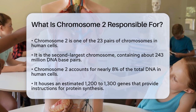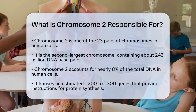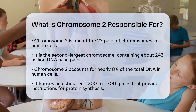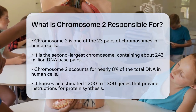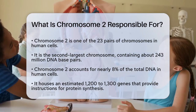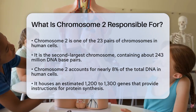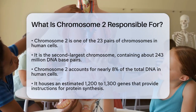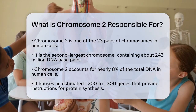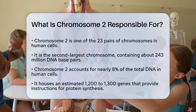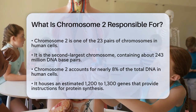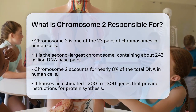Chromosome 2 is one of the 23 pairs of chromosomes found in human cells. It's the second largest chromosome, spanning about 243 million DNA base pairs, which is nearly 8% of the total DNA in our cells.